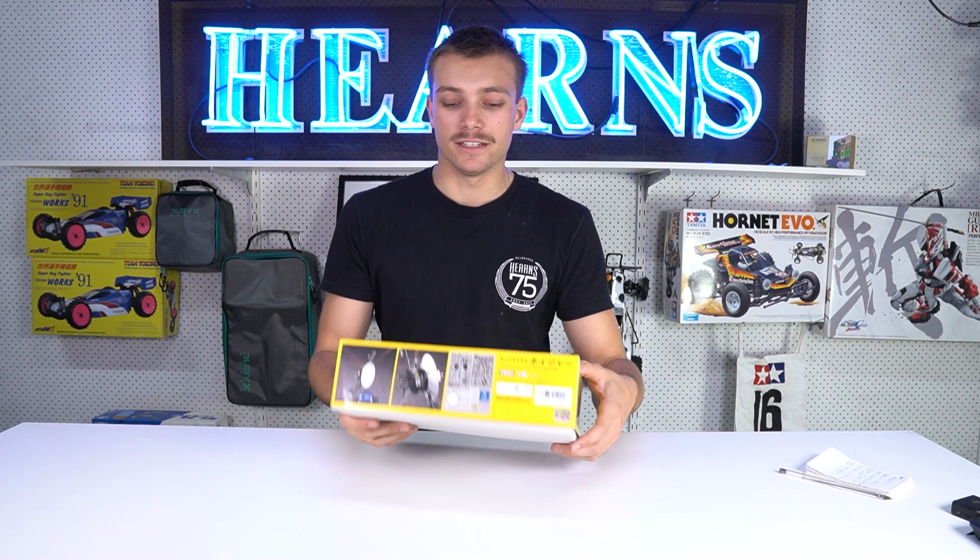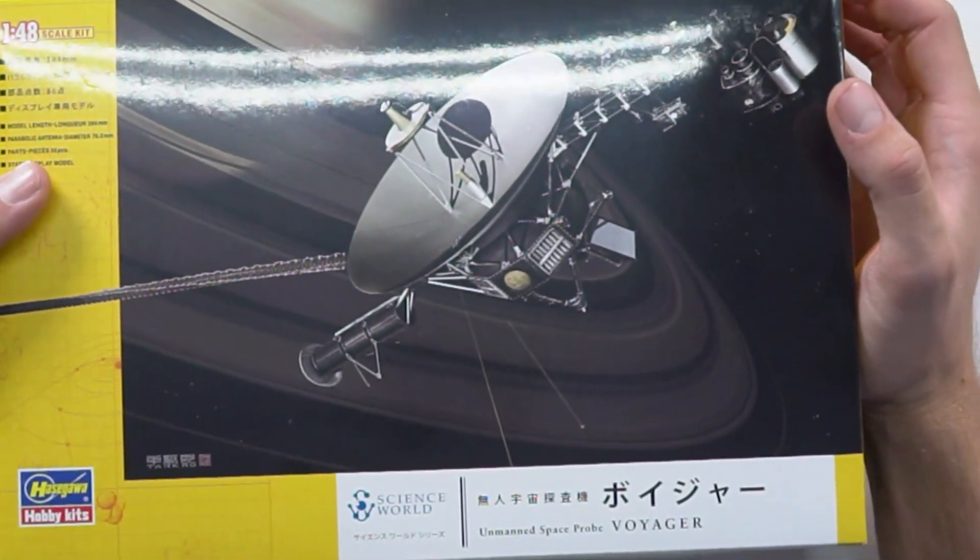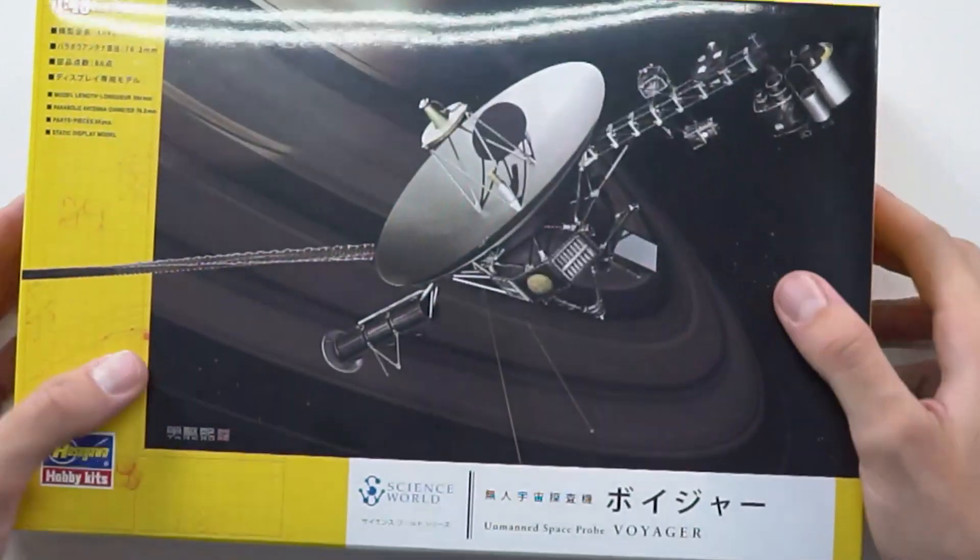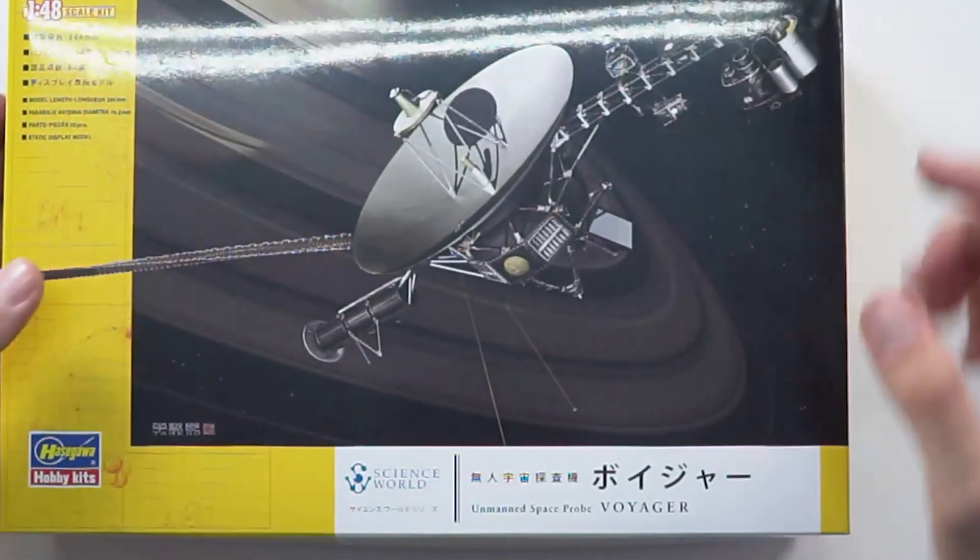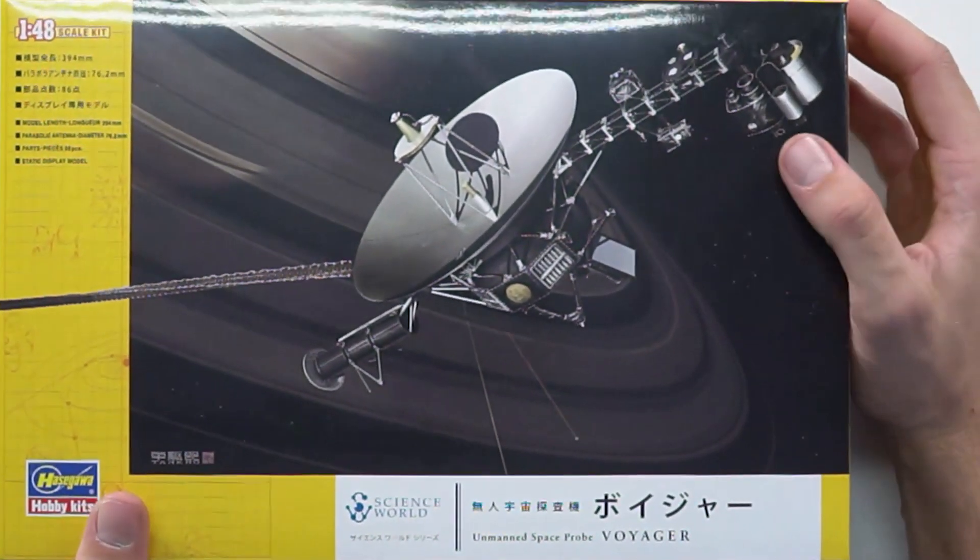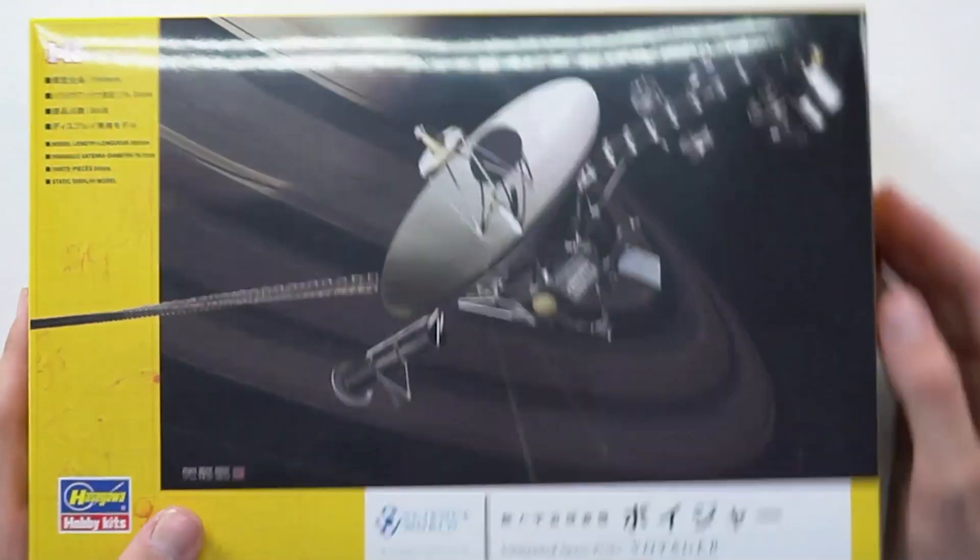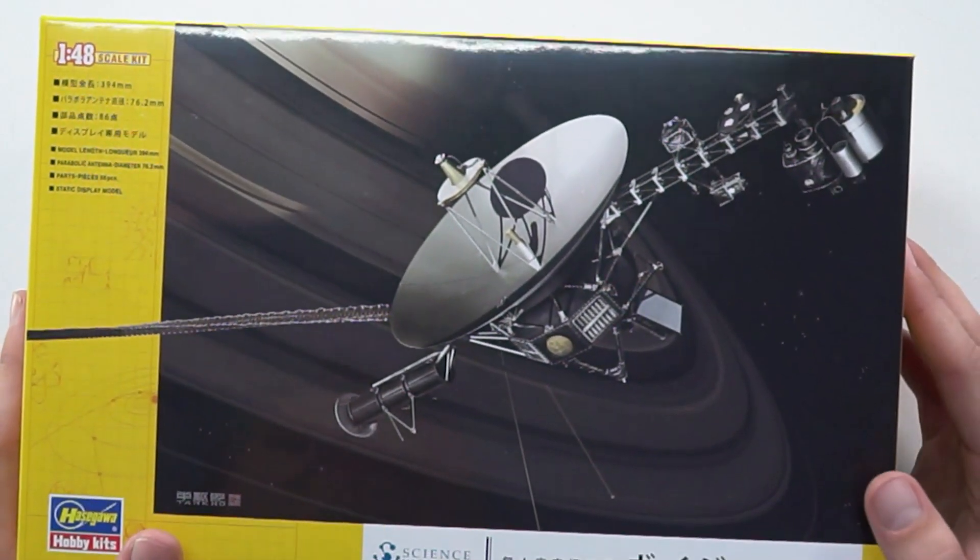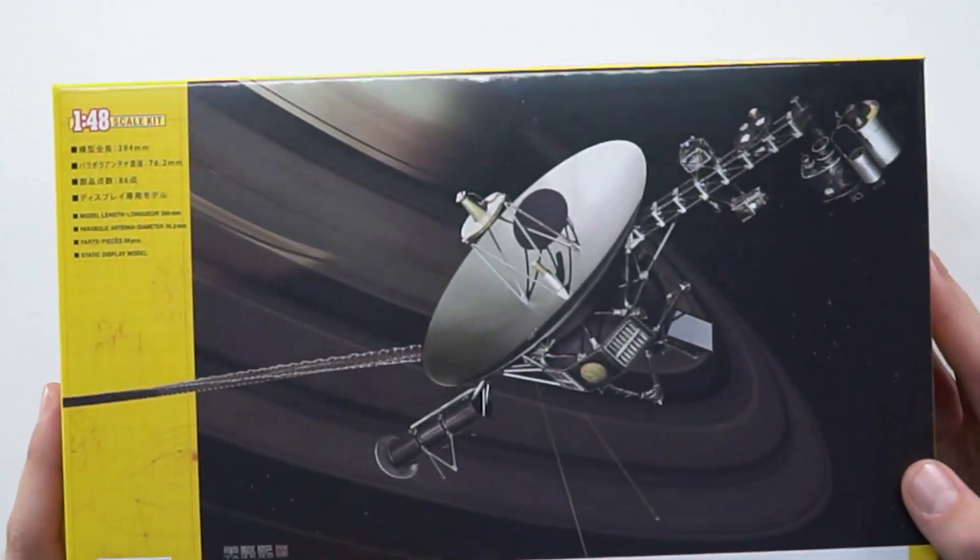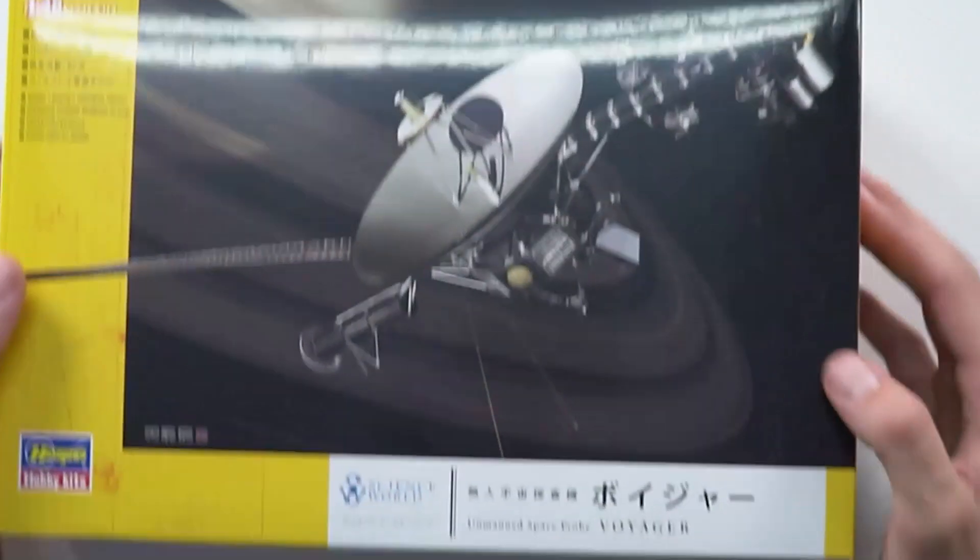It passed our heliosphere, I believe I'm saying it right, in 2008. So there's the Voyager 1 and there's the Voyager 2. The Voyager 1, which is this one, actually took off after the Voyager 2 but it reached its target earlier. It is currently 15 billion miles away from us from where it was launched, and it is still going. There are live updates on the NASA website.